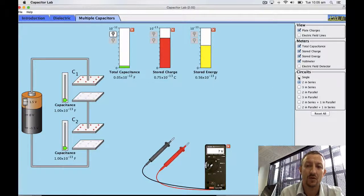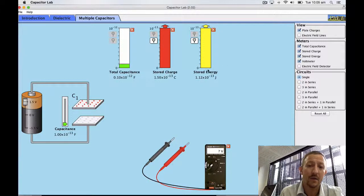Now let's just go back to our single capacitor and we can see that with a single capacitor at 1.5 volts and remember it's 1 times 10 to the negative 3 farads, I'm storing 1.12 times 10 to the negative 13 joules of energy.